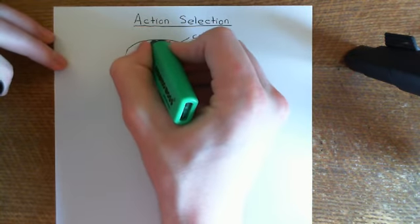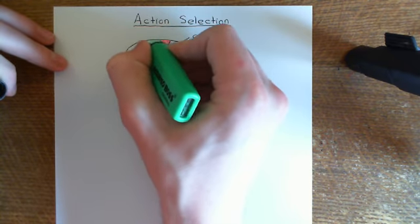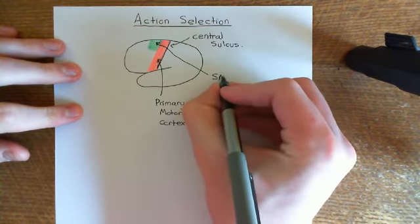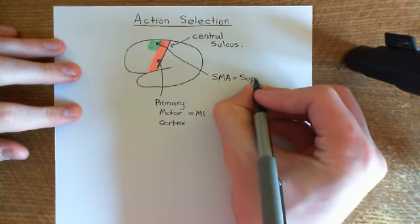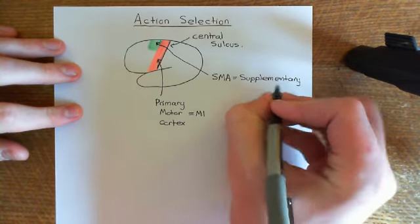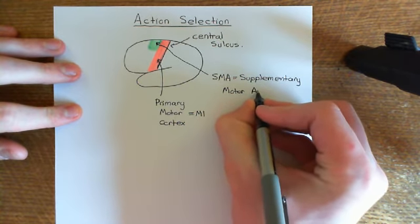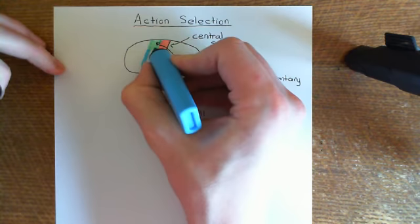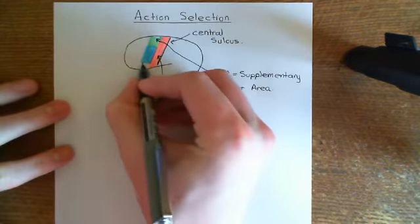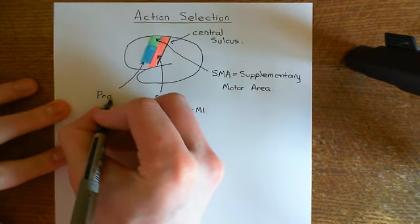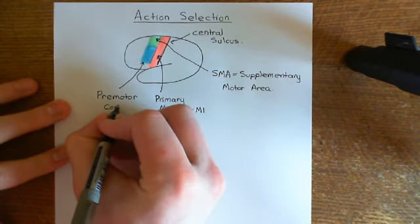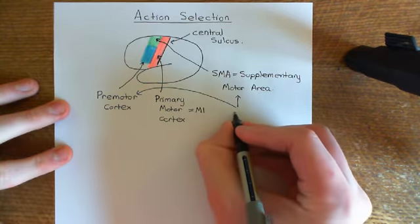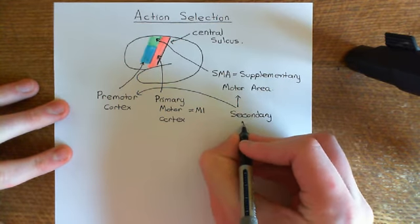In front of the primary motor cortex are the areas collectively known as secondary motor cortex. Up here in green is an area known as the supplementary motor area, or SMA for short. Then another portion of secondary motor cortex lies down here in blue: this is the premotor cortex, sometimes called the premotor area. Together, the supplementary motor area and the premotor area are collectively known as secondary motor cortex, or more rarely M2.